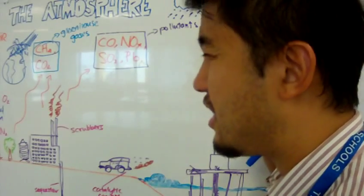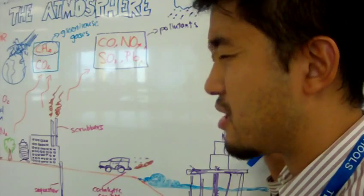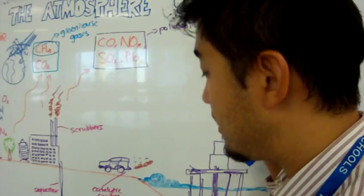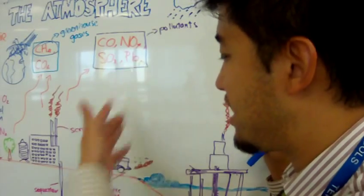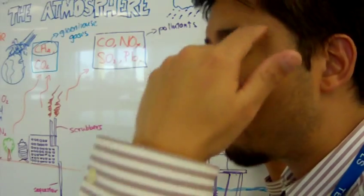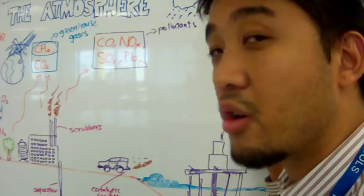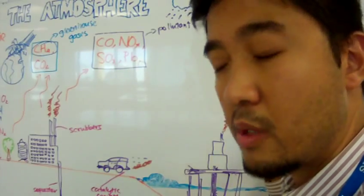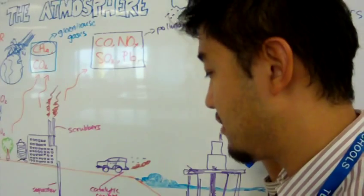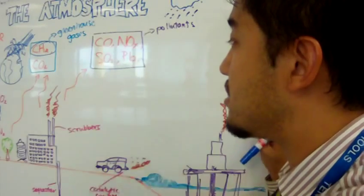Lead, in the form of an ethyl lead molecule found inside leaded petrol, is bad because lead is a slow poison that prevents brain development in young organisms. So what are we doing to reduce the number of pollutants? Well, for lead, most places have banned leaded petrol, so that's gone — which is good.